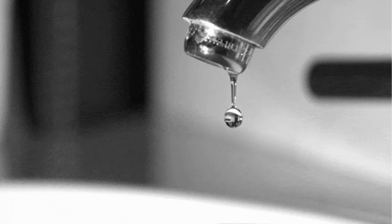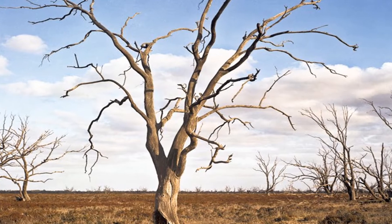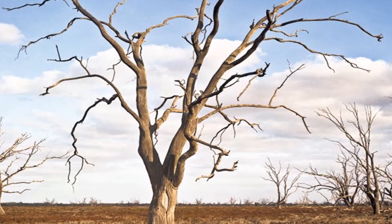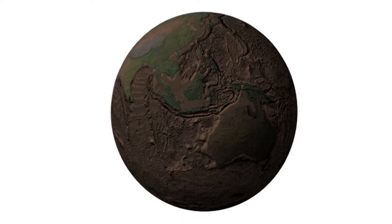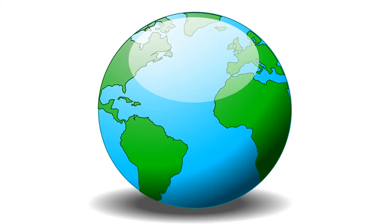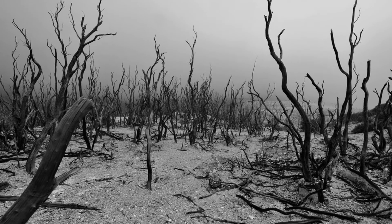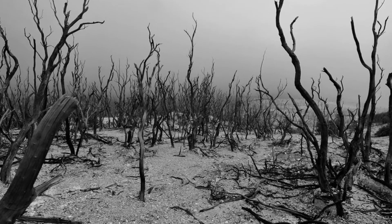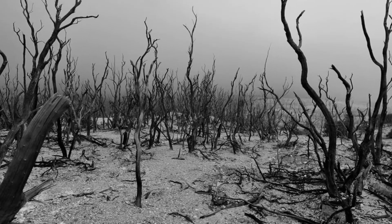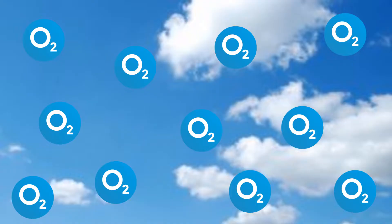With no water supply, all vegetation would soon die out, and the world would resemble a brownish dot rather than a green and blue one. Without any plants, photosynthesis would not take place to release oxygen, and consequently the oxygen content in the atmosphere would go down.